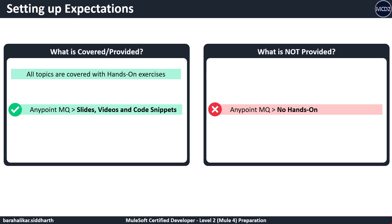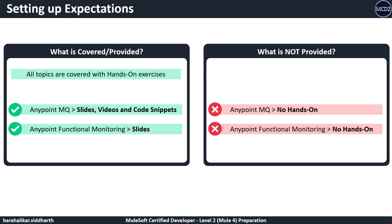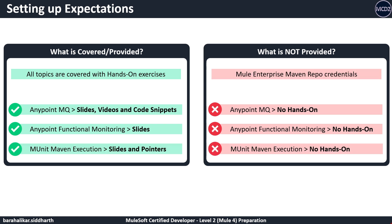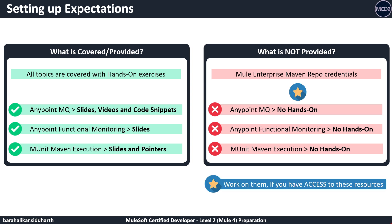We will provide slides, videos, and code snippets, and it is the same for functional monitoring. We will be using an external API monitoring solution to understand the concepts, which is more or less the same. We do not have and will not provide Mule Enterprise Maven repository credentials. MUnit Maven execution depends on this, and hence we will cover the concepts through slides and do MUnit testing using Anypoint Studio. All other hands-on walkthroughs can be done without enterprise credentials. If you have access to any of these resources via your partner portal or some other means, you could use them for hands-on purposes.